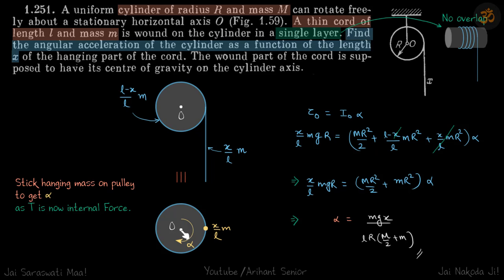Calculate torque with respect to O, so τ = I₀α. Torque will be (x/l)mgr. I₀ will be due to the mass of the rope on the periphery and the moment of inertia of the cylinder itself, so I₀ = mr²/2 + [(l-x)/l]mr².